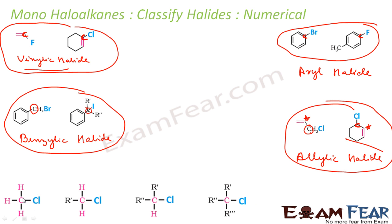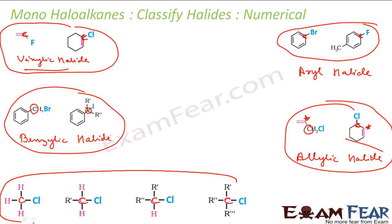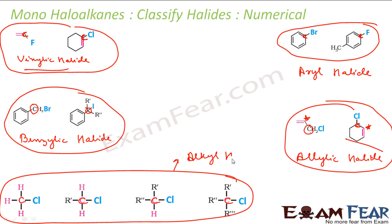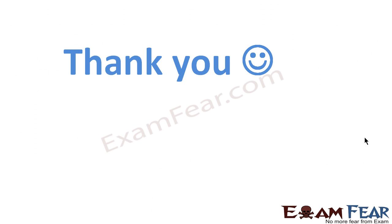Finally, in the remaining examples, the hero carbons are simply attached to alkyl groups — no double bonds, no aromatic ring adjacent. So these are all alkyl halides. That completes our classification of the various types of haloalkanes and haloarenes.